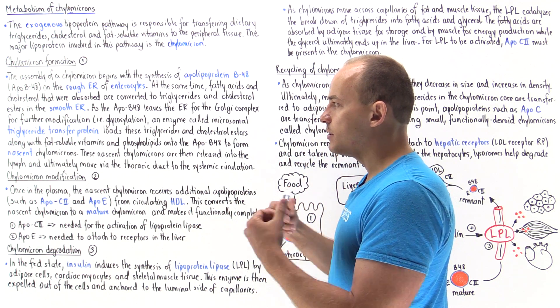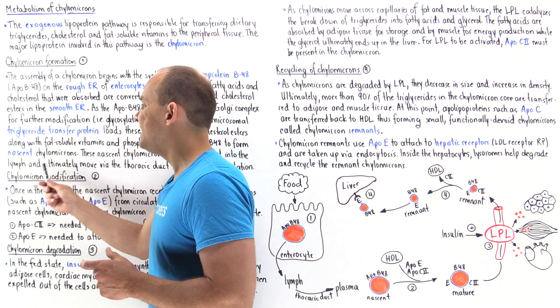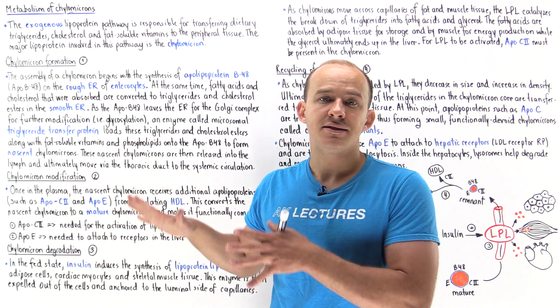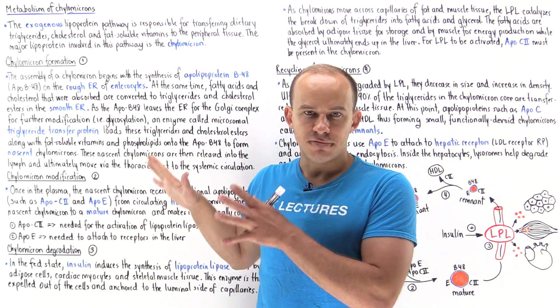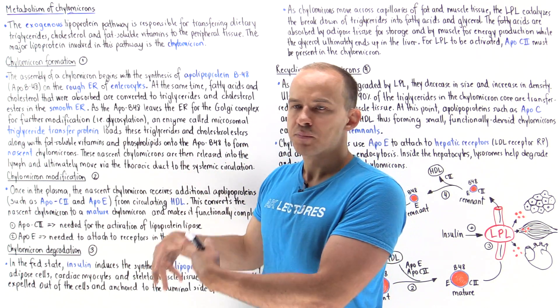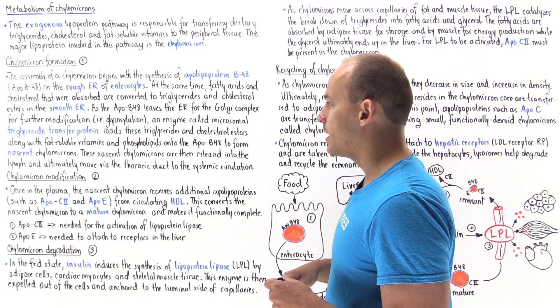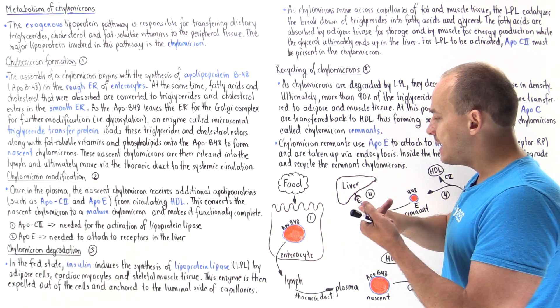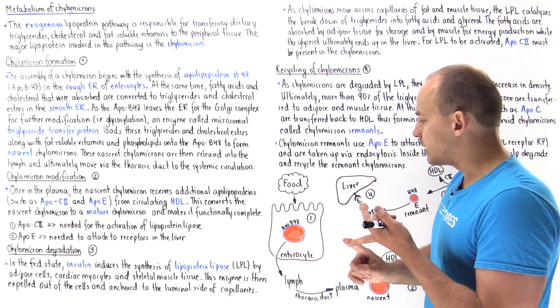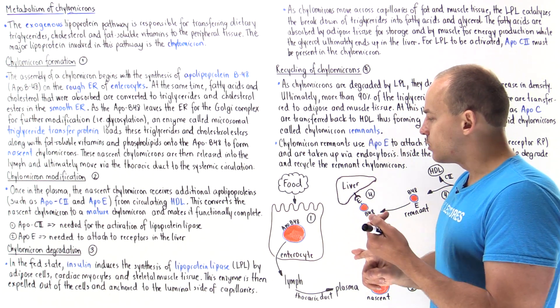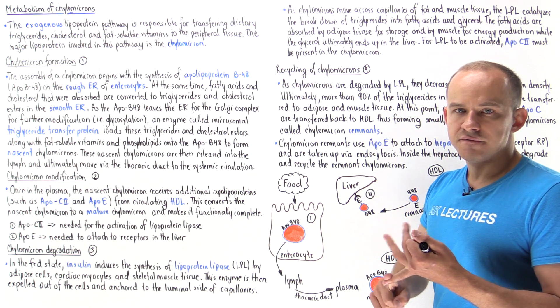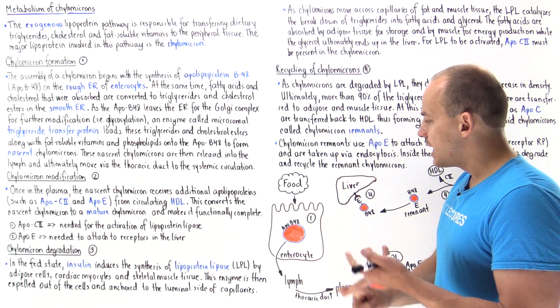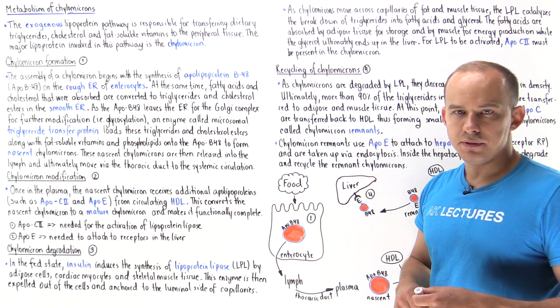Once we form this chylomicron, we call it a nascent chylomicron because it's not yet fully functional. So it's an immature nascent chylomicron. This nascent chylomicron basically contains triglycerides and cholesterol esters within the core. It also contains fat soluble vitamins, phospholipids, and apolipoprotein B48.